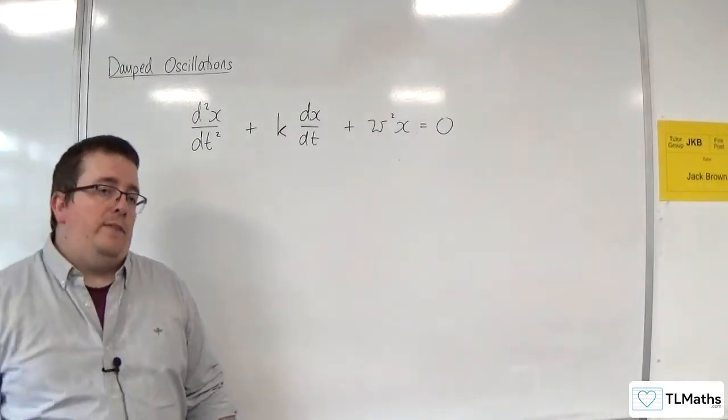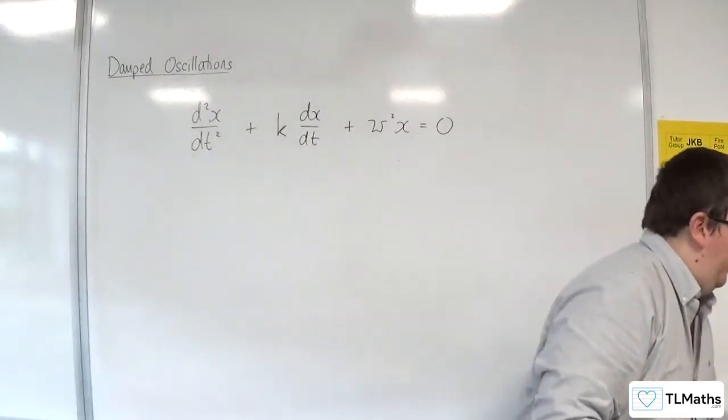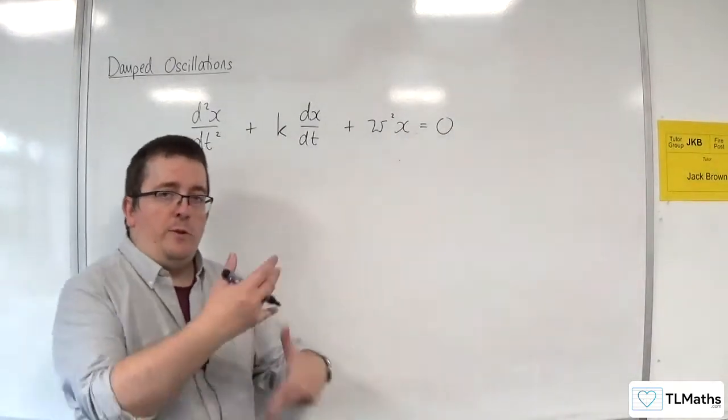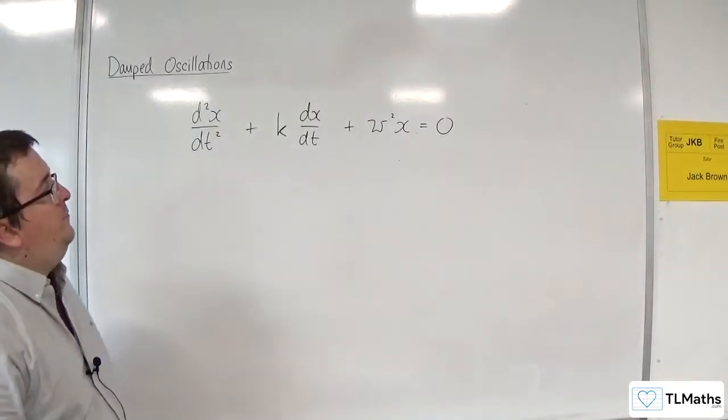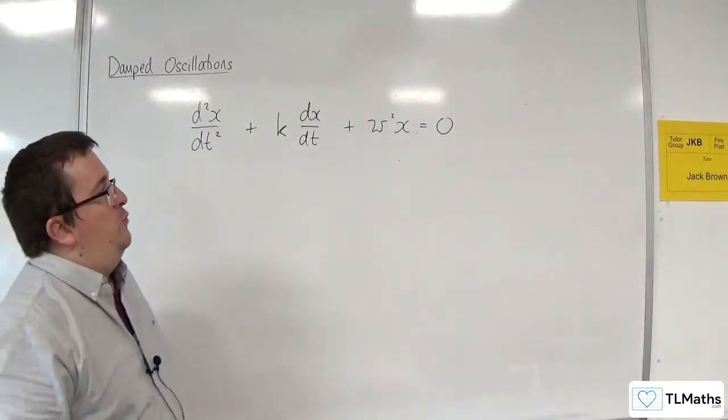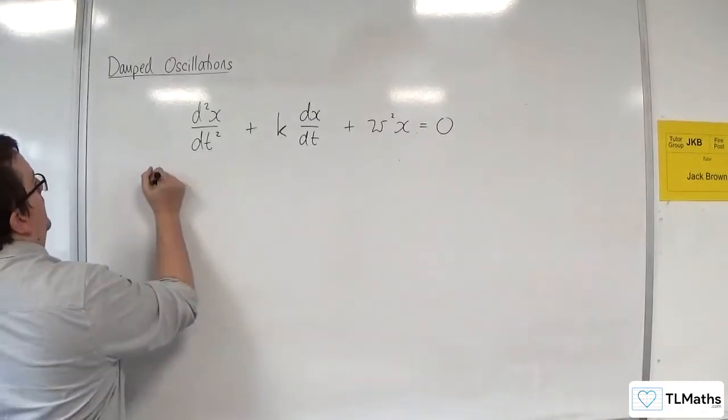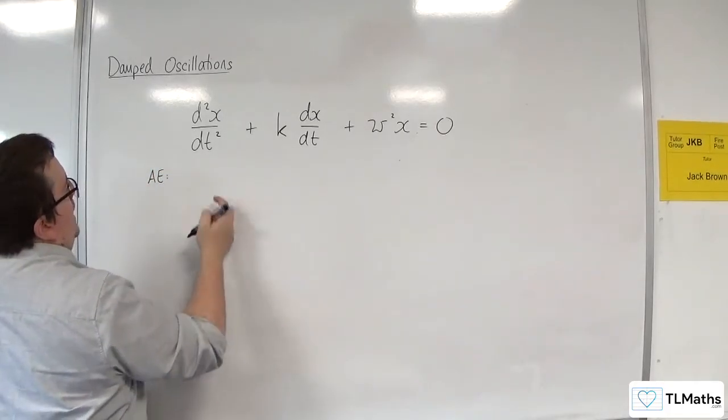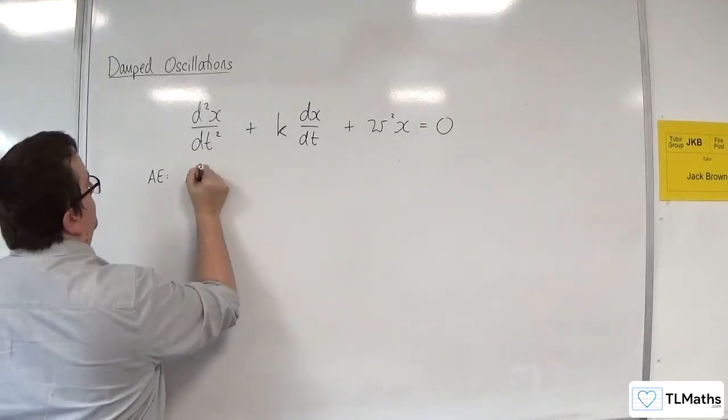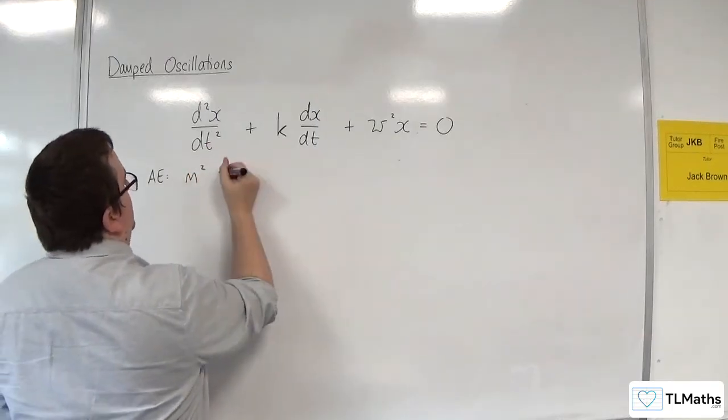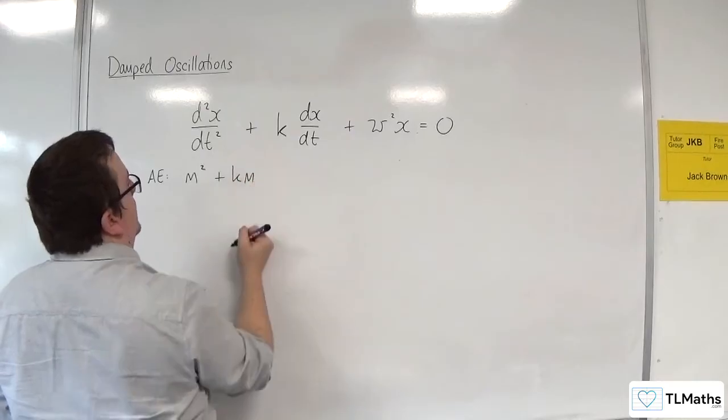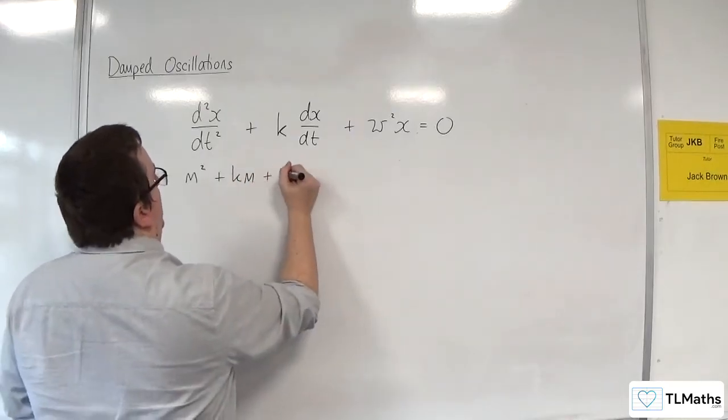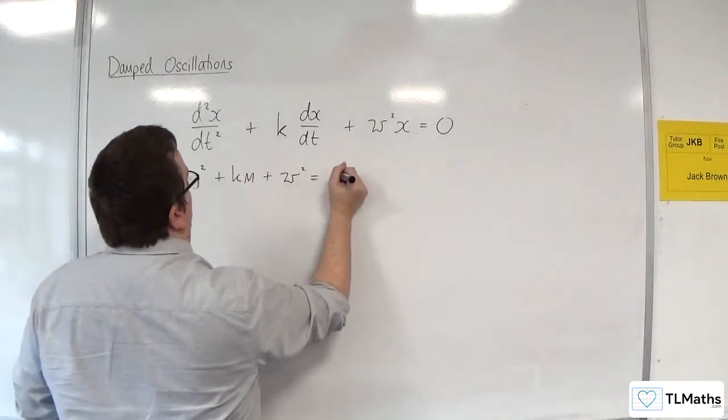Now, the effect that has, we have looked at in the previous video when we were doing our investigative work. And we looked at the auxiliary equation for this. So the auxiliary equation would be m² plus km plus ω² is equal to 0.